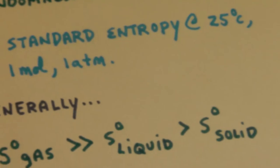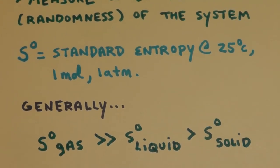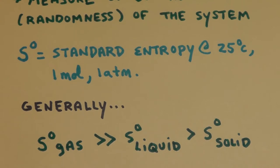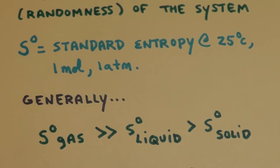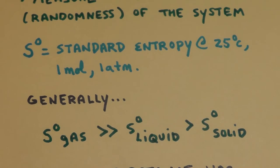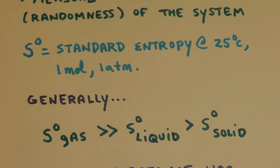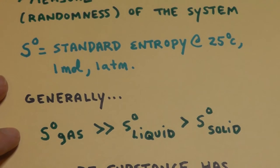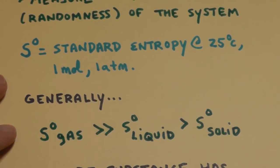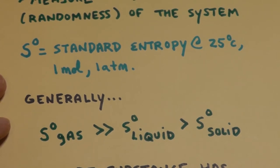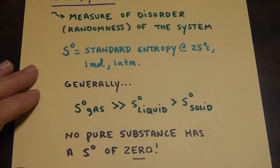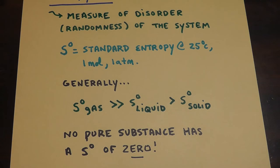We can make the sweeping generalization that entropy of a gas is much more than the entropy of a liquid, which is much greater than the entropy of a solid. Gases are very random, moving around with a lot of disorder. Liquids are somewhat random, molecules stuck together in layers. Solids are stuck in a crystal structure, rattling around in place. At 25 degrees, nothing has an entropy of zero because everything has some molecular motion.